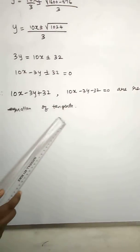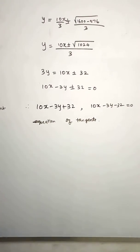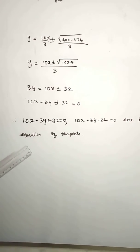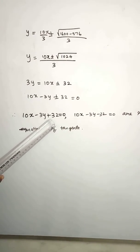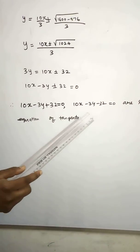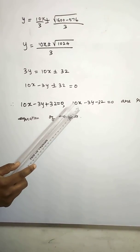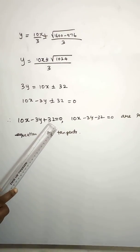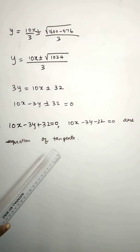So 10x minus 3y plus 32 equal to 0. But in the book, they've written plus 3y which is wrong. So the correct answer is 10x minus 3y plus 32 and 10x minus 3y minus 32.